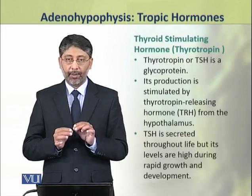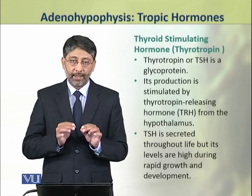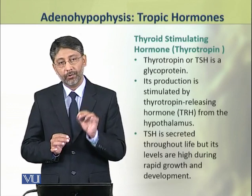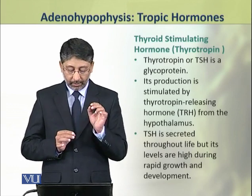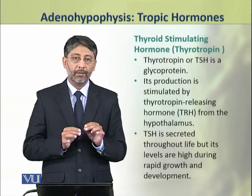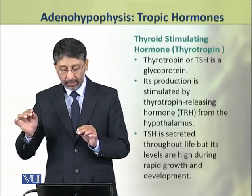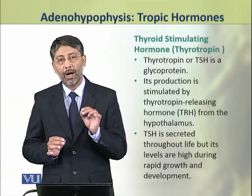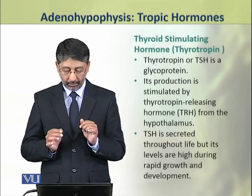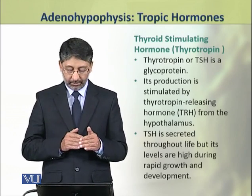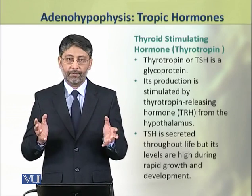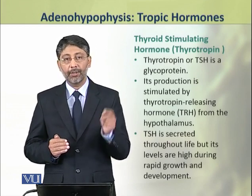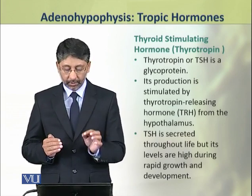Thyrotropin, or TSH, the thyroid stimulating hormone, is a glycoprotein. Its production is stimulated by the thyrotropin releasing hormone, TRH, from the hypothalamus. TSH is secreted throughout life, but its levels are particularly high during fast growth and development.